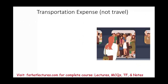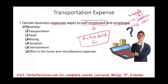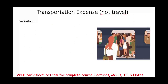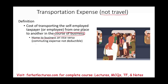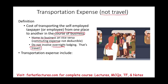So what is transportation expense? First, it's not travel — travel is totally different and we're going to have a whole session about that. Transportation expense is defined as the cost of transporting the self-employed individual or employee from one place to another in the course of business. Home to business is a commuting expense — going from your home to your business place as an employee is not deductible. Also, transportation expense does not involve overnight lodging; once you get to overnight lodging, we're talking about travel, which is handled separately. Deductible transportation expenses include parking, taxi fares like Uber and Lyft, automobile expenses, and tolls.